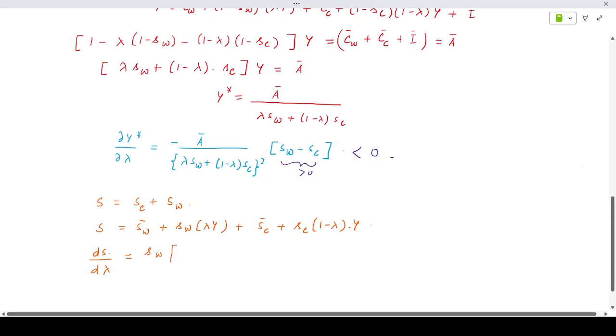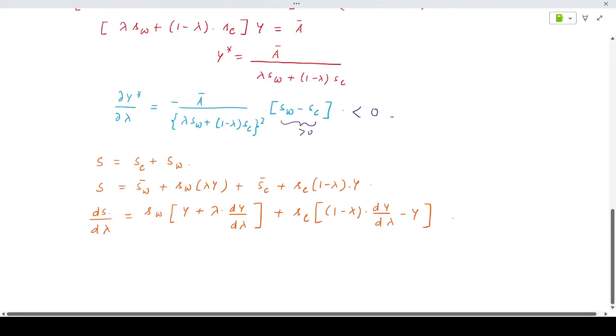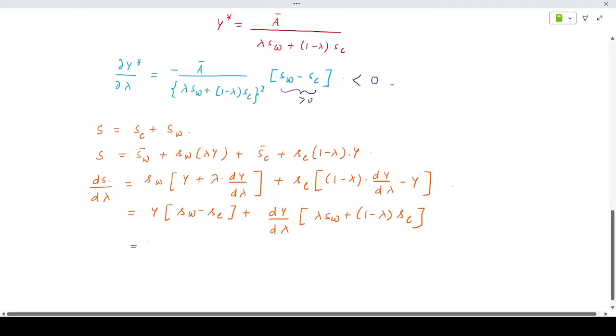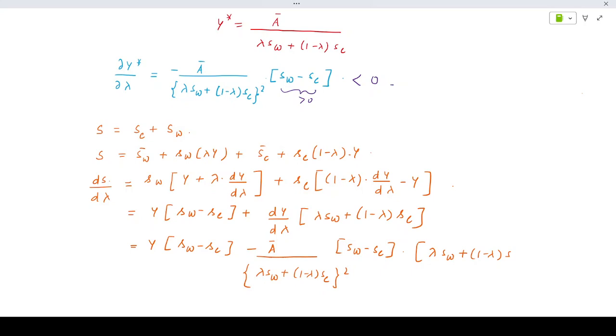If we take out the Y components, that would be Y times SW minus SC plus dY by d lambda times lambda SW plus 1 minus lambda SC. That is Y times SW minus SC and dY is minus A bar times lambda SW plus 1 minus lambda SC whole square times SW minus SC, and the remaining is lambda SW plus 1 minus lambda SC.